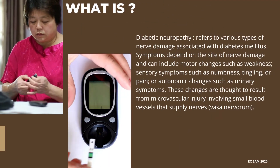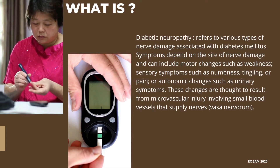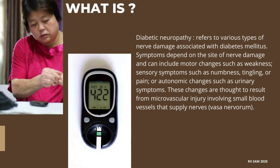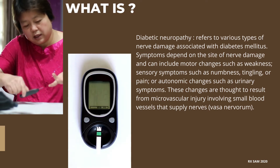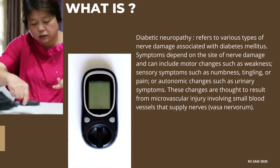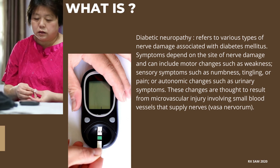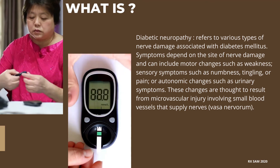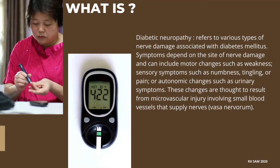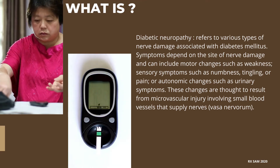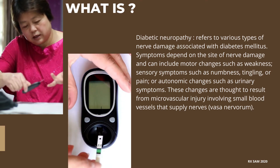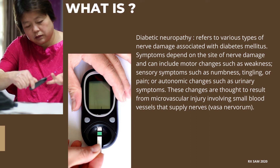Diabetic neuropathy refers to various types of nerve damage associated with diabetes mellitus. Symptoms depend on the site of nerve damage and can include motor changes such as weakness, sensory symptoms such as numbness, tingling, or pain, or autonomic changes such as urinary symptoms. These changes are thought to result from microvascular injury involving small blood vessels that supply nerves, known as vasa nervorum.